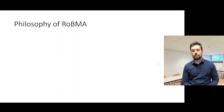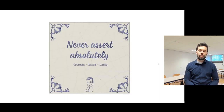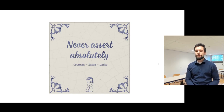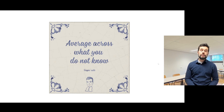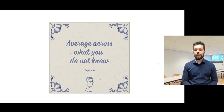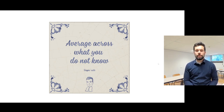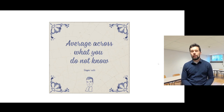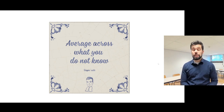Starting with the philosophy behind ROBMA, I will draw on two tiles that my supervisor uses in the introduction to Bayesian statistics. The first tile is: never assert absolutely. In other words, be mindful of our assumptions — if we set them in stone and hard-code them into our models, no amount of data can ever change our mind. The second tile is: average across what you don't know. Assuming we did not assert absolutely and kept our mind open about different plausible assumptions, we should average across that uncertainty to draw inference.